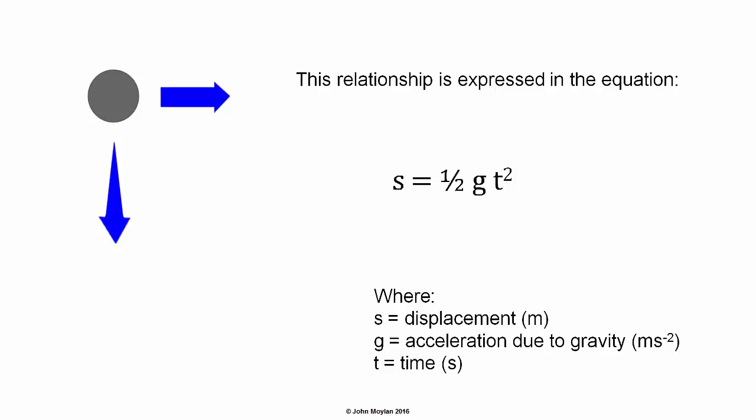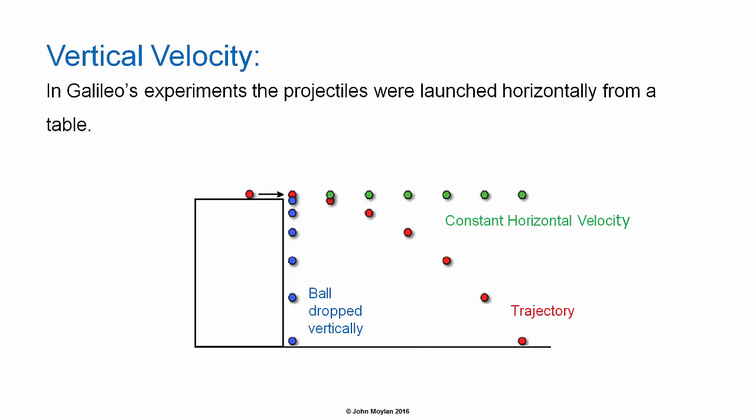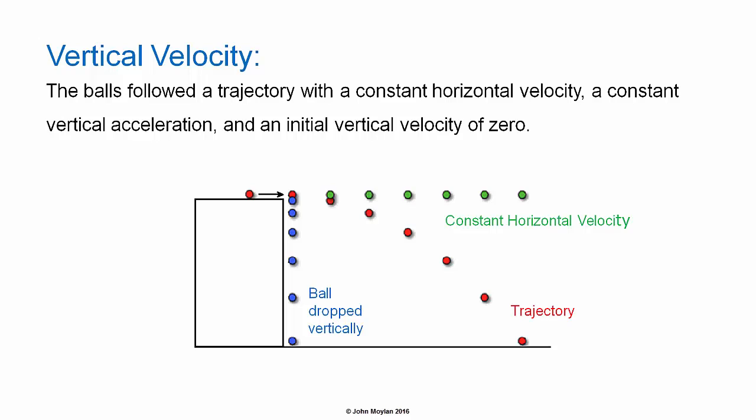In Galileo's experiments, the projectiles were launched horizontally from a table. In the diagram you can see a horizontal surface at some height above the ground, with the ball rolling horizontally along it until it comes to the edge. The balls followed a trajectory with a constant horizontal velocity, represented by the green ball at the top, and a constant vertical acceleration, represented by the blue ball, with an initial vertical velocity of zero.